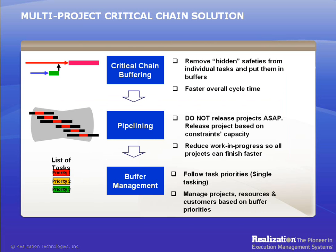The Critical Chain Solution is used in multi-project environments to reverse the delays caused by following traditional rules of project management and execution. In a multi-project environment, the Critical Chain Solution consists of three parts. First, projects are converted to Critical Chain Format where the longest resource-dependent path is identified. Task durations are cut for aggressive task estimates and buffers are added to protect the critical chain pipeline.